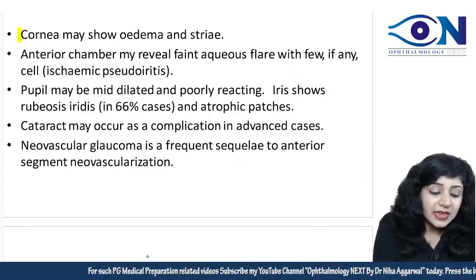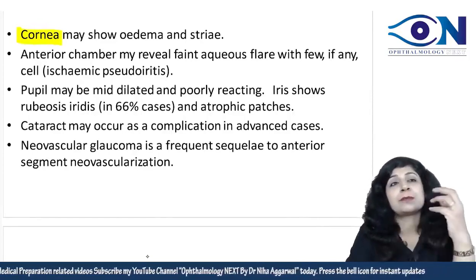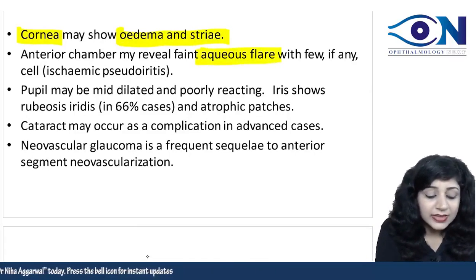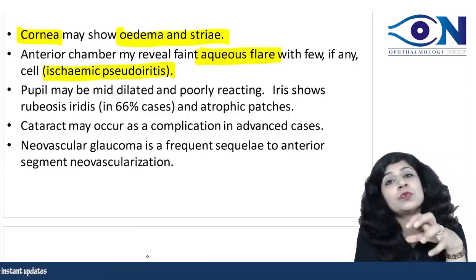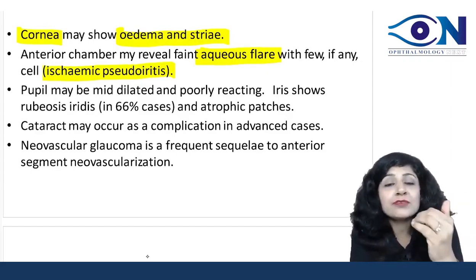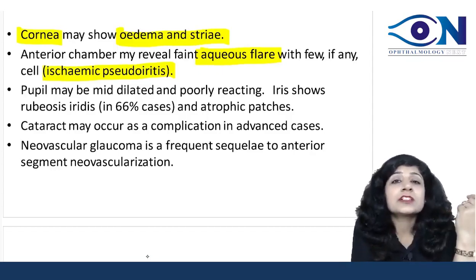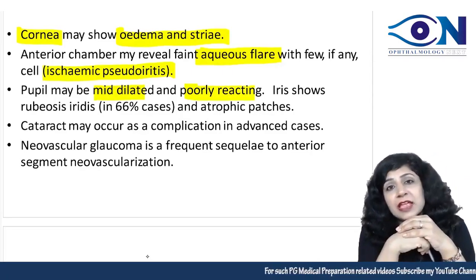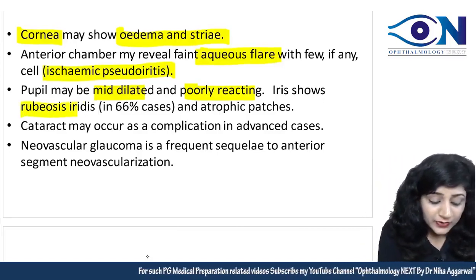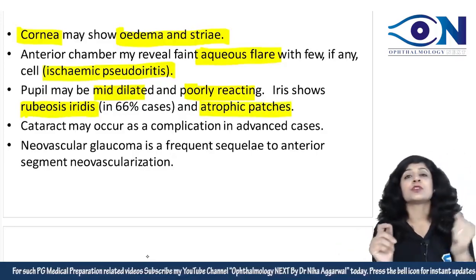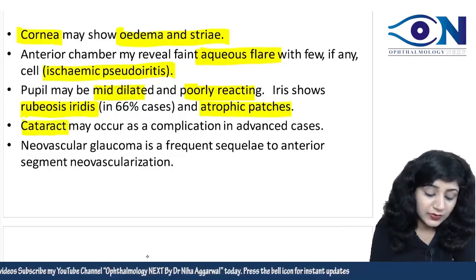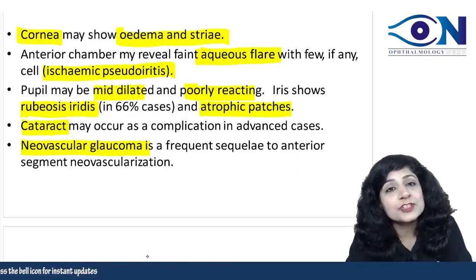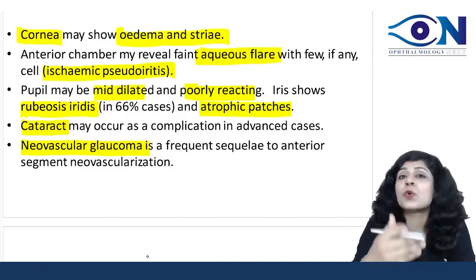Signs include features of hypoperfusion. In the cornea: edema and striae. The anterior chamber shows signs of inflammation called ischemic pseudoiritis — it mimics inflammation but isn't truly inflammatory. The pupil is mid-dilated and poorly reacting. Due to hypoperfusion and ischemia in the anterior segment, the iris shows neovascularization (rubeosis iridis), atrophic patches, and complicated cataract can develop. Neovascular glaucoma may follow.